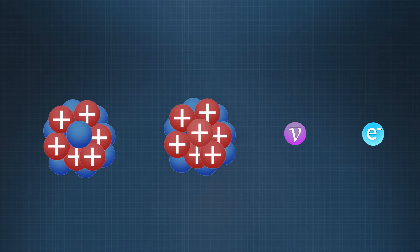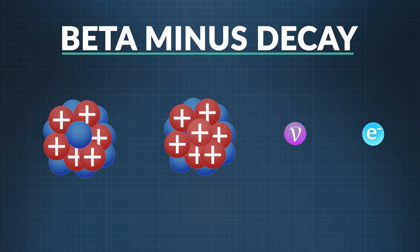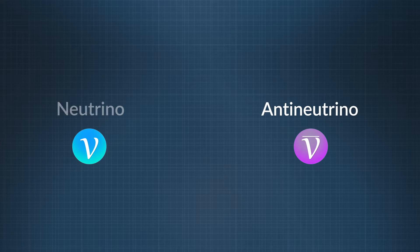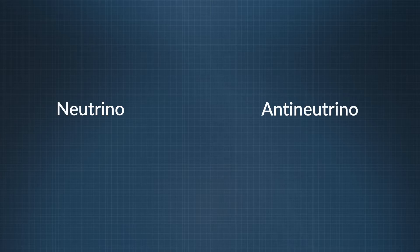There are two types of beta decay. Beta minus decay occurs when a neutron decays into a proton, an electron, and an antineutrino. The proton stays in the nucleus, while the electron and the antineutrino shoot out. Antineutrinos and neutrinos are subatomic particles with infinitesimally small masses and no charge — they are like mirror twins, and if they collide, they will annihilate each other.